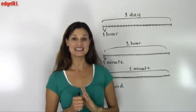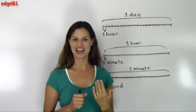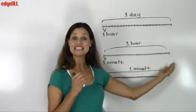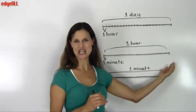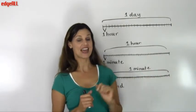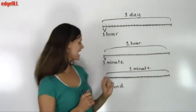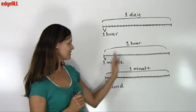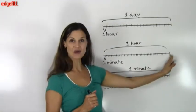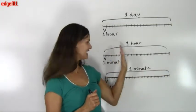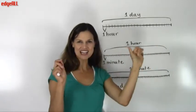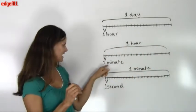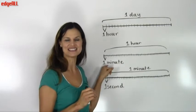And if you divide the length of one hour into sixty equal sections, the length of each section is one minute. Each of those sixty little equal sections is equal to one minute.